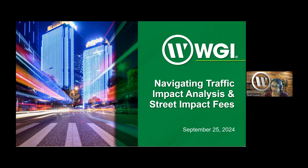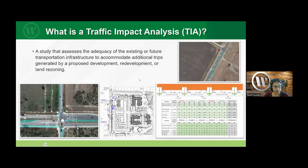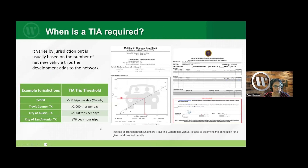A question that sometimes catches people off guard — whether it's developers, civil engineers, or whoever's doing due diligence on the site — is when a TIA is required. The requirements for when a TIA is required can change based on the jurisdiction. For example, TxDOT requires a TIA if the development is generating more than 500 trips a day, which is a pretty low threshold.